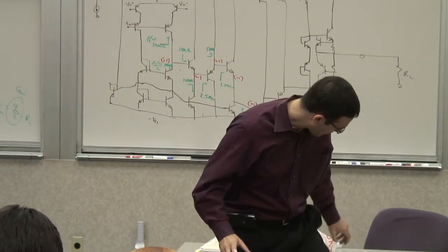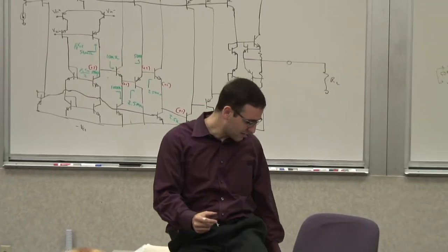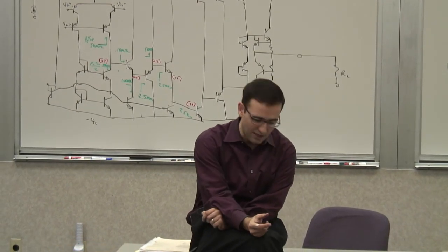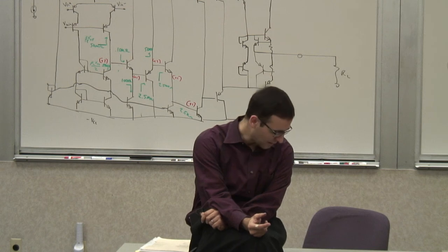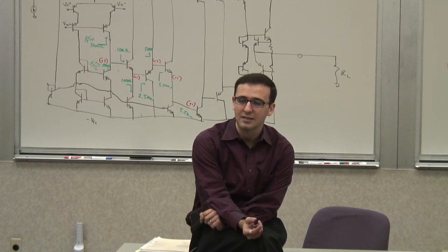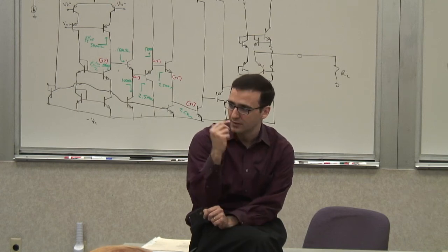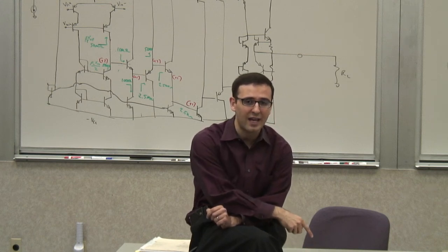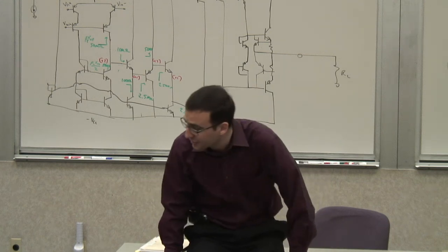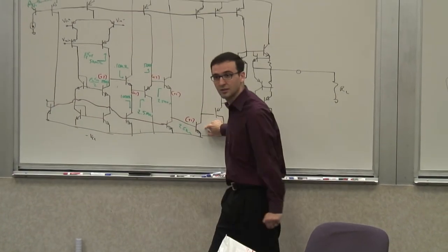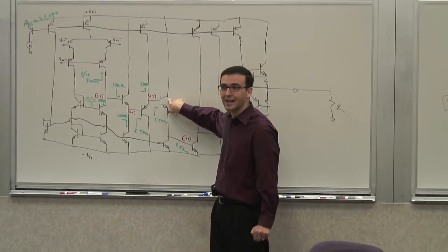The output of that first stage goes to the base of Q16, which is a follower — a common collector. What it does is it increases the input impedance seen by the first stage due to the input of Q17, which is your next gain transistor. Q17 is the second gain stage. Q16 is the follower stage, except that instead of biasing with a current source, they decided to bias it with a resistor.